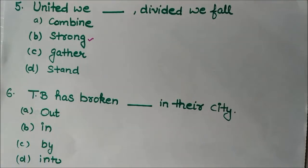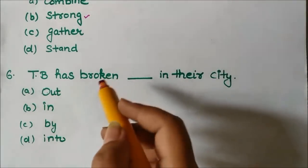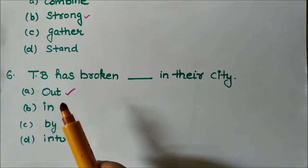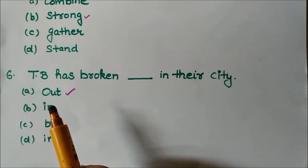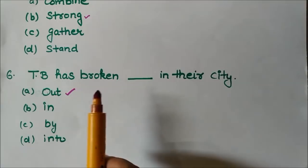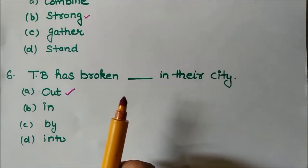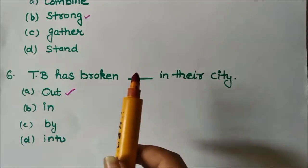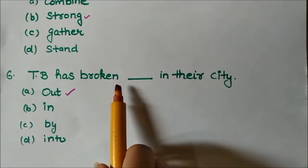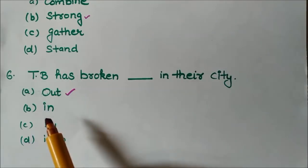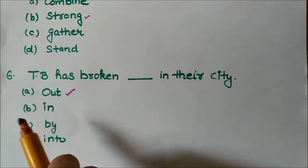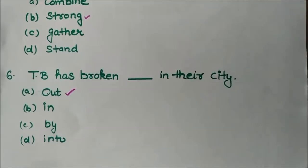Next question: 'TB has broken ___ in their city.' I chose 'out' directly because when something strikes or spreads, we say 'broken out.' Broken out in their city means TB is increasing and affecting people. Options 'in,' 'by,' and 'into' don't fit. Answer: 'TB has broken out in their city.'